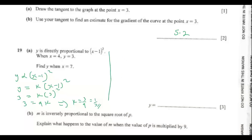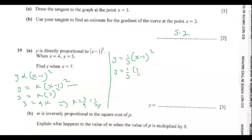So the equation is y = (1/3)(x − 1)². Now we want to find y when x = 7. So y = (1/3)(7 − 1)² = (1/3)(6²) = (1/3)(36). Since 3 divides into 36 twelve times, y equals 12.